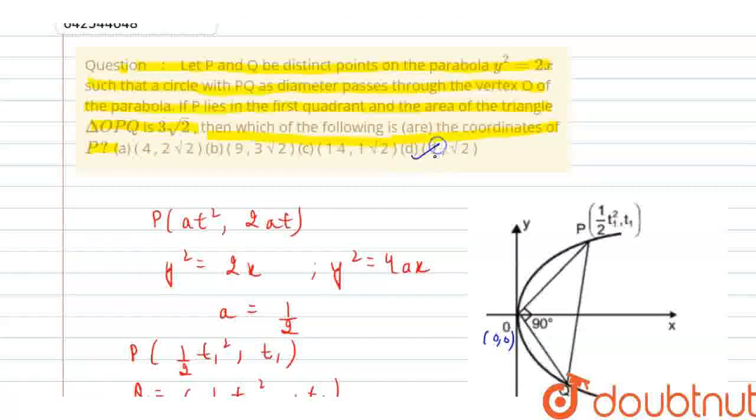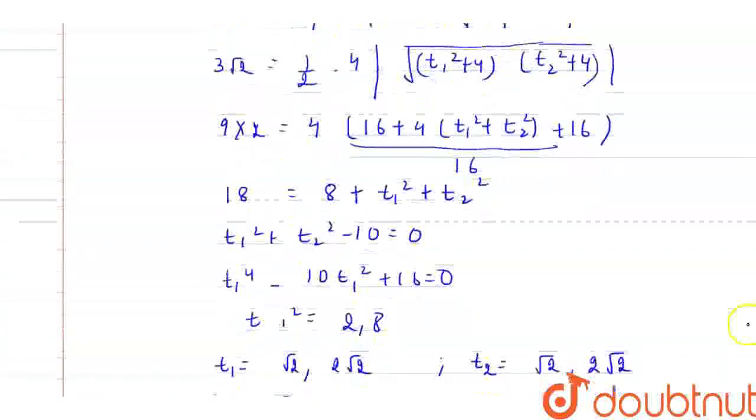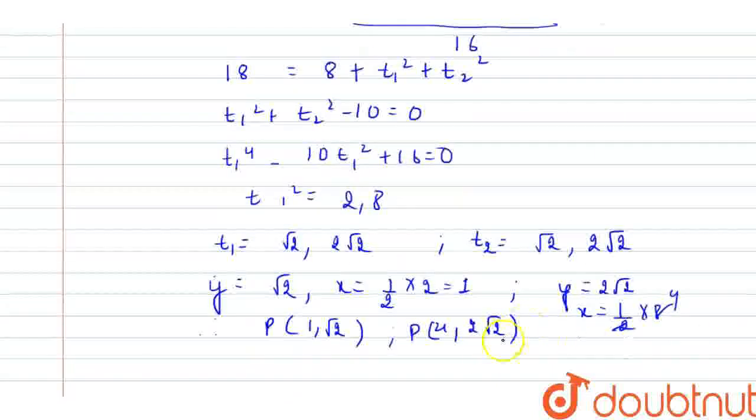So, 1 comma root 2, this is correct, and 4 comma 2 root 2. Therefore, option A and D are the correct options. Option A and D are the correct options. I hope it is clear.